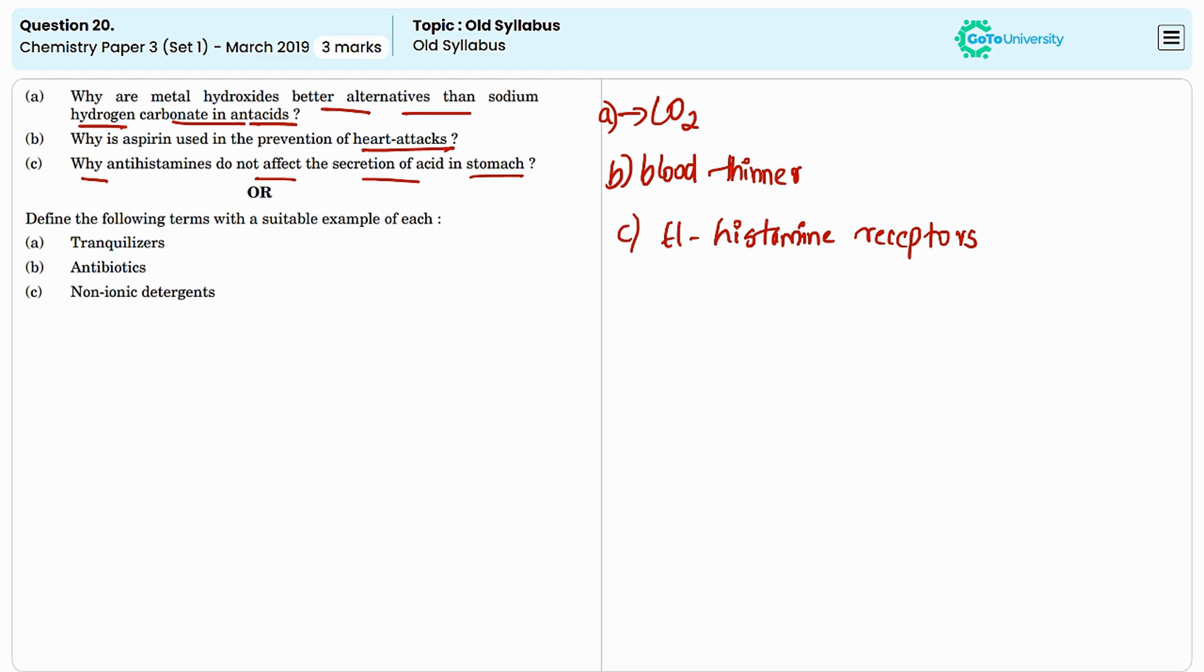The third one is: why do antihistamines not affect the secretion of acid in stomach? Antihistamines do not affect stomach acid secretion because they block H1 histamine receptors which are primarily involved in allergic reactions such as itching, sneezing, and inflammation.